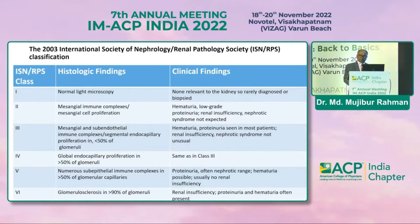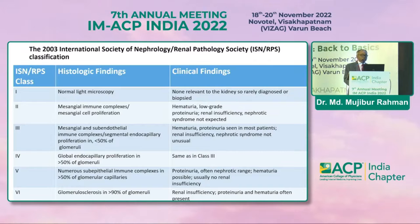This is the histological classification proposed by the International Society of Nephrology and Renal Pathology Society. This is the gold standard classification of lupus nephritis, ranging from class 1 to class 6. The important classes are 3, 4, and 5. These three classes are very important and need to be treated very aggressively.